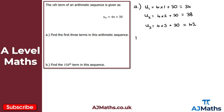For part b, we're asked to find the 150th term in the sequence. Using the nth term u_n = 4n + 30, we need u150: that's 4 × 150 + 30. 4 times 150 gives 600, plus 30 gives 630. So the 150th term is 630. That's our solution to part a and part b of question one.